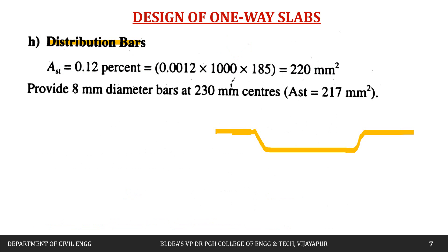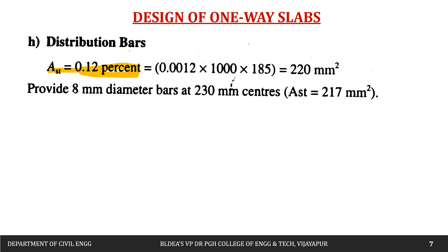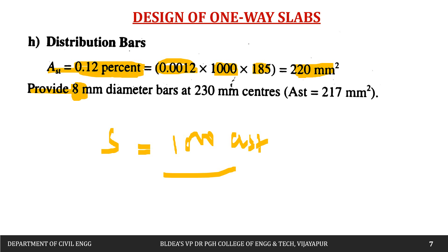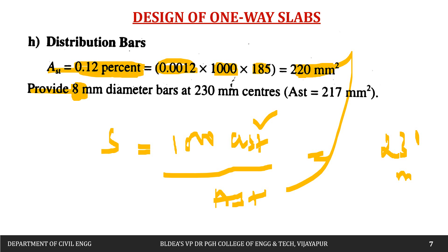For distribution steel in the transverse direction, provide minimum reinforcement = 0.12% × b × D = 0.12% × 1000 × 185 = 220 mm². Using 8 mm diameter bars, spacing = 1000 × (π/4 × 8²) / 220 = 1000 × 50.3 / 220 ≈ 230 mm. Adopt 8 mm dia bars at 230 mm c/c.